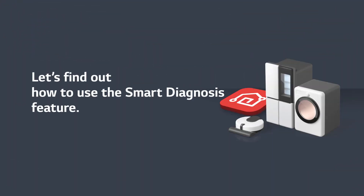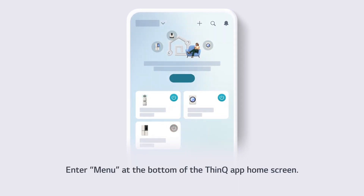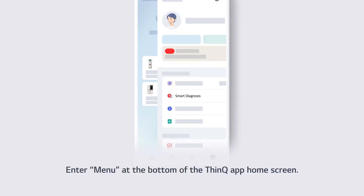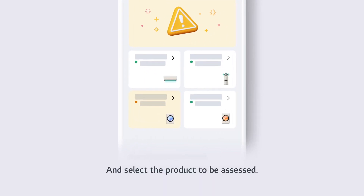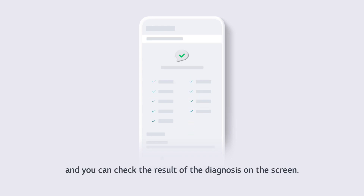Open the ThinQ app on your mobile device and enter the menu at the bottom of the ThinQ app home screen. Tap Smart Diagnosis and select the product to be assessed. Smart Diagnosis will then begin, and you can check the result of the diagnosis on the screen.